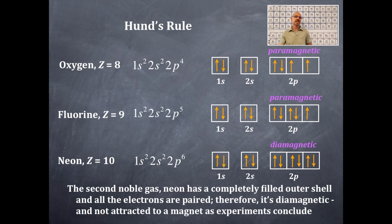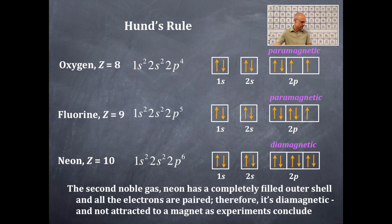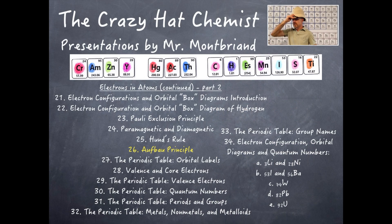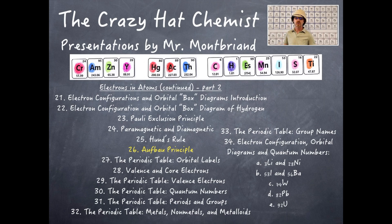Hopefully you understand the Pauli exclusion principle and Hund's rule together. Hund's rule is not violating the Pauli exclusion principle — it deals with where you place electrons: maximum multiplicity first, filling different orbitals with parallel spins before pairing. Give me a thumbs up if you liked the video, subscribe to the YouTube channel, and I'll see you next time for more chemistry.